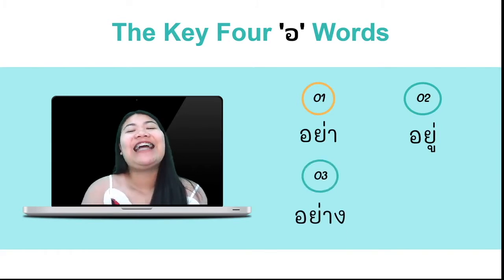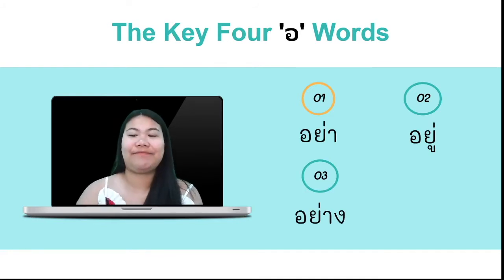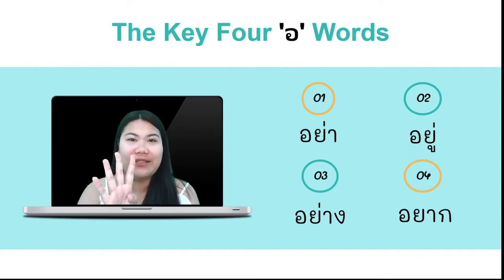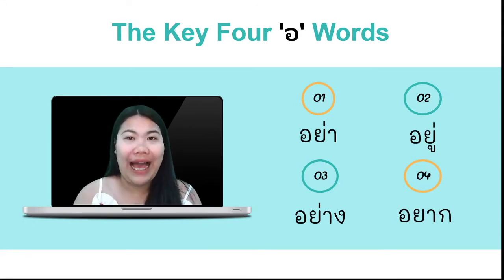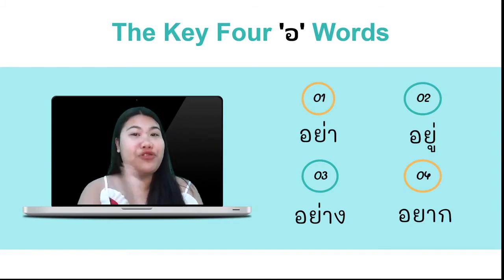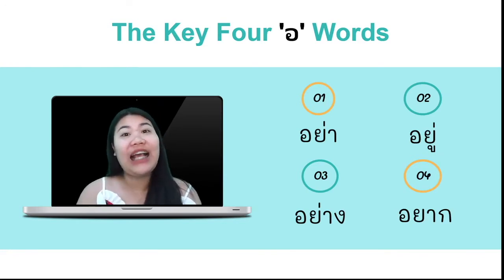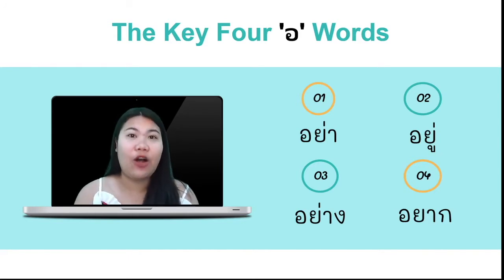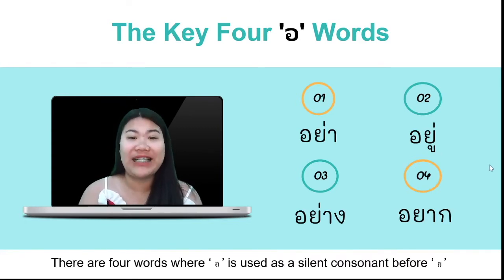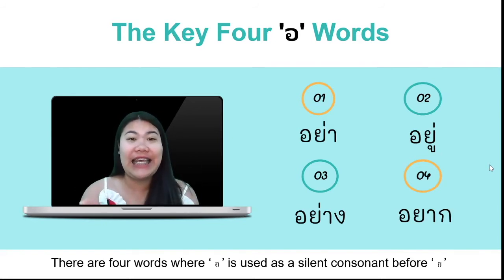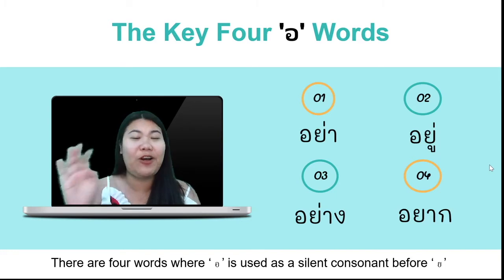The word อยู่ here is low tone too. So we have four words: อย่า, which means 'don't'; อยู่, which means 'to be located'; อย่าง, which means 'kind or type'; and อยาก, which means 'want.' There are four words where อ นำ is used as a silent consonant before อ, and we pronounce only อ and follow the tone rule from middle class consonants. This is easy if you remember how to pronounce these four words because there are not many.